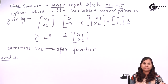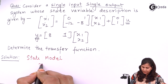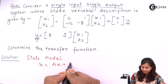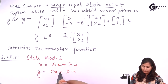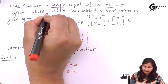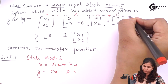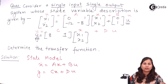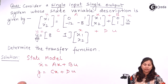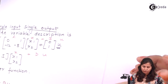As we know, the state model in a generalized way is represented as: x_dot = Ax + Bu, and y = Cx + Du. By comparing these two equations with the given state model, we can identify the values of the matrices A, B, C, and D.